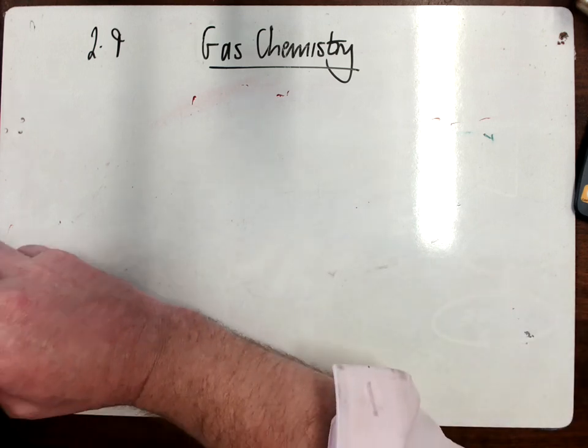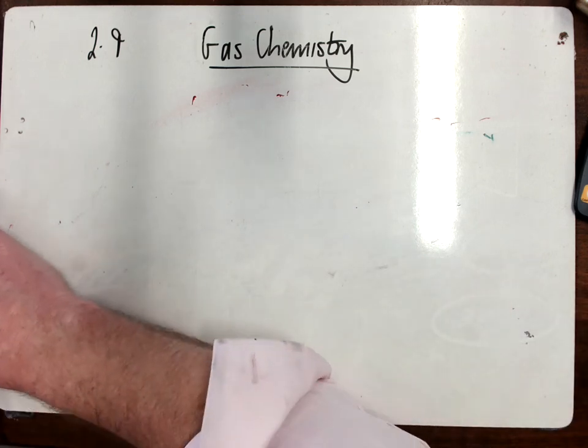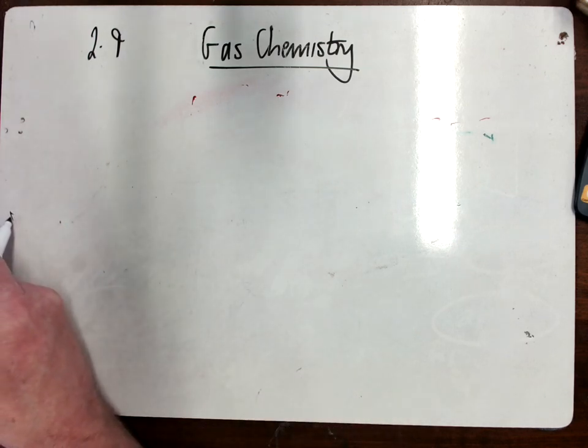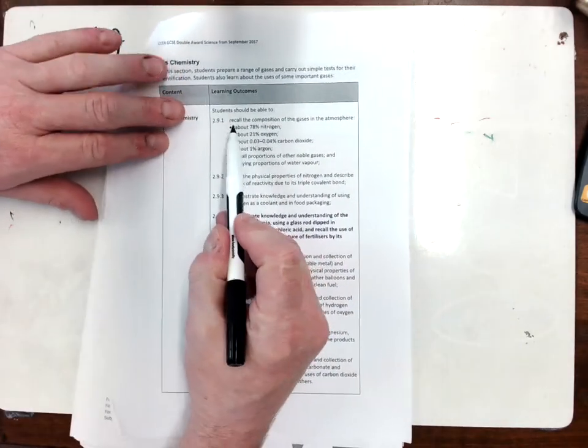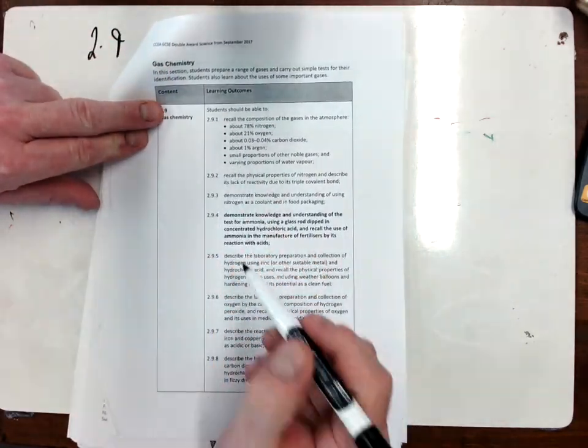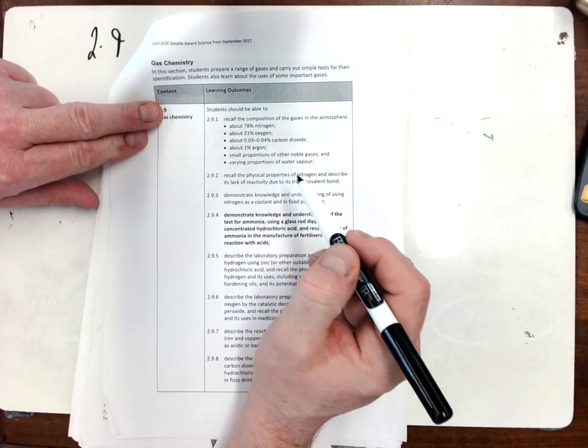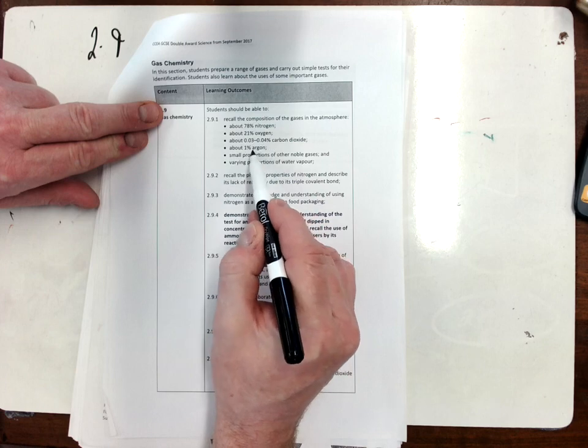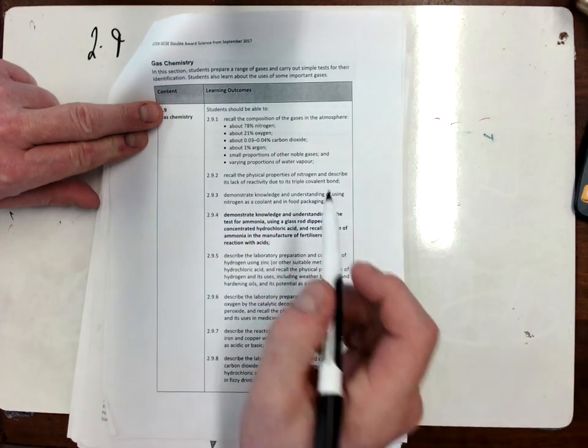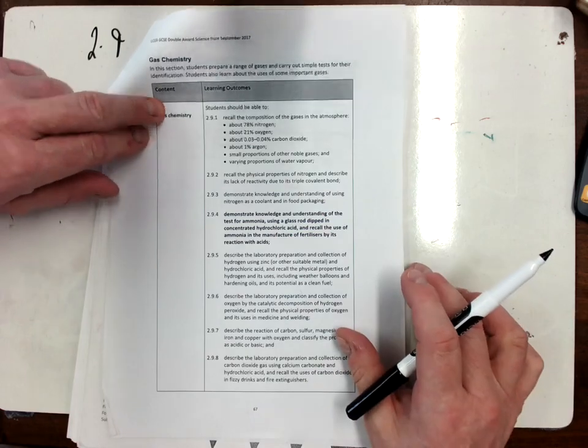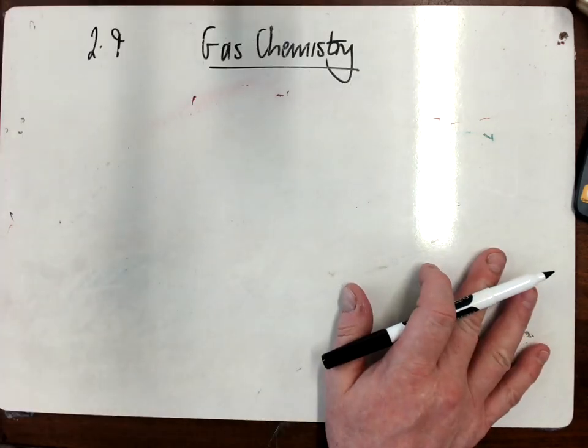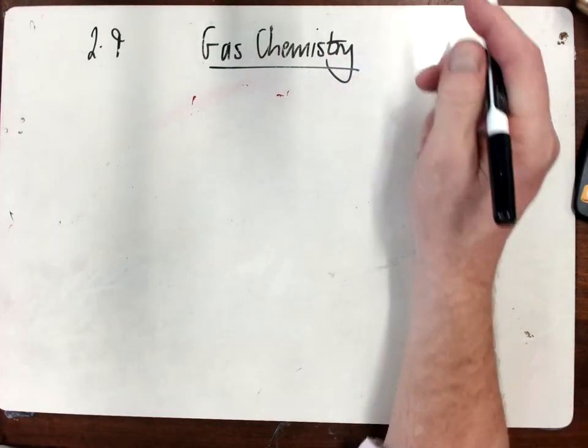The first thing that students will be asked is to recall the composition of gases in the atmosphere. This is pretty straightforward, something you've probably done in key stage three. So it's this rough composition: nitrogen at about 78%, oxygen at 21%, carbon dioxide about 0.03 to 0.04%, about 1% argon and other noble gases and water. They may just ask you to talk about the composition of those gases in the atmosphere.